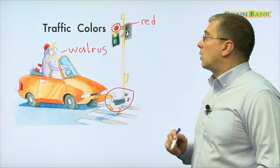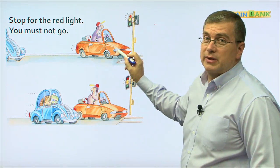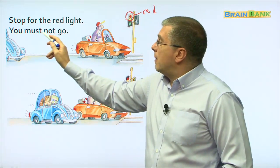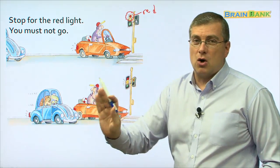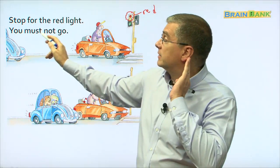Let's learn more about these traffic colors. As we saw, the walrus is stopped in his car because the light is red. Stop for the red light — you must not go. Mr. Walrus, you must not go. Let me hear you read: Stop for the red light. You must not go.